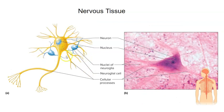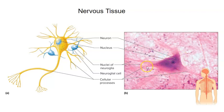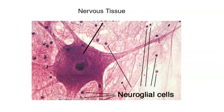Here is a nerve cell cartoon alongside the real thing under a microscope. We can see the body of the neuron, the nucleus, and projections (either axons or dendrites) coming off the cell body. The other small nuclei surrounding the neuron are the nuclei of the neuroglia — the supporting nervous tissue cells.